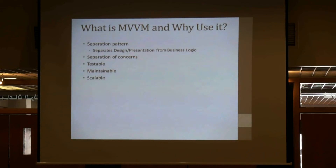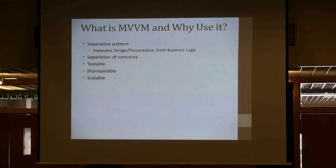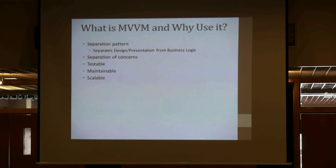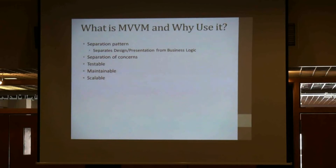For example, if you successfully separated the data tier or the model itself and minimized the dependency on other parts, you can easily change the model. For example, if you are storing the data in a SQL Server database and you successfully isolated the code that deals with the database in a separate layer, you can easily change that code to use another database or even store in SQL Azure or whatever other data storage. So this is the main importance of this pattern — it allows you to build testable, maintainable, and scalable applications.